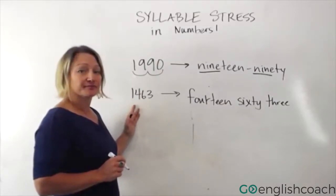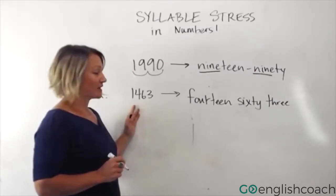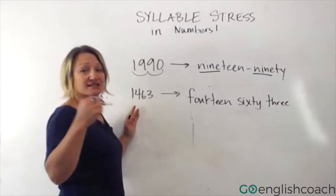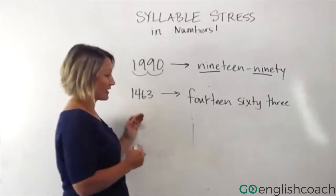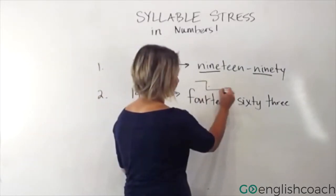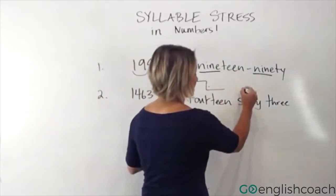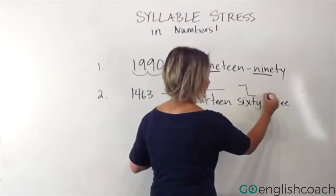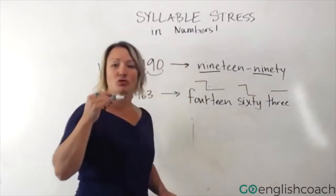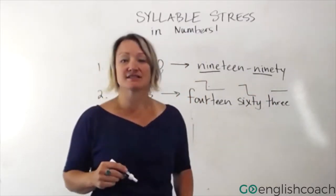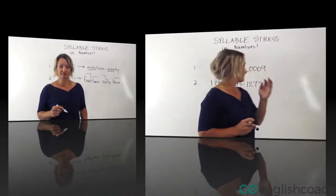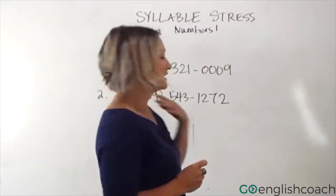Now let's try 1463 — 'fourteen sixty-three.' 1463. We're doing this rhythm: 'fourteen sixty-three.' 1463.